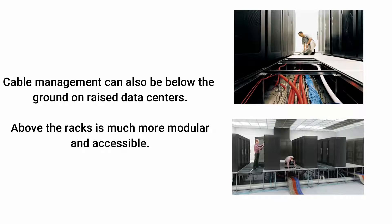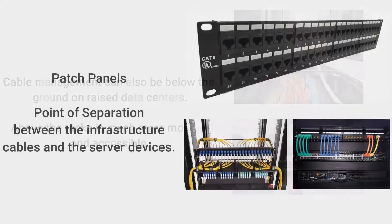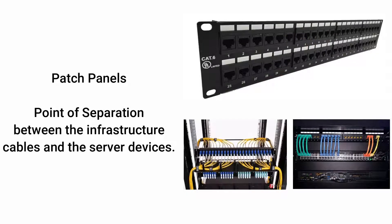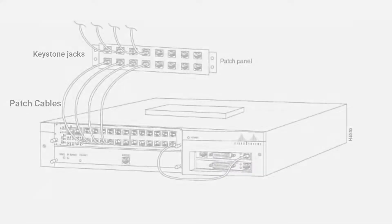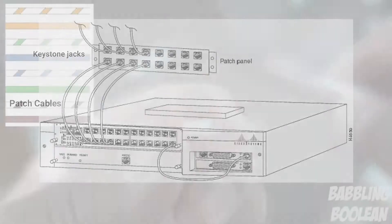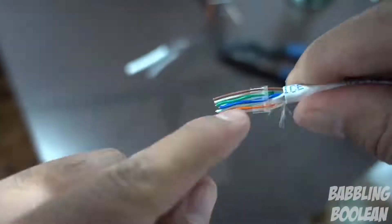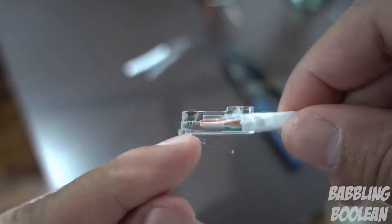Cable management can also be below the ground on raised data centers; however, above the rack, the cabling is much more modular and accessible. Patch panels are a point of separation between the infrastructure cables above or below the server racks. Patch cables connect server devices to the patch panel keystone jack, and the keystone is terminated to the infrastructure cables. Terminating a cable is the work performed to the end of a cable in order to connect it to a device.